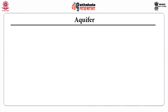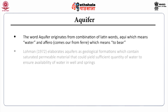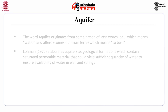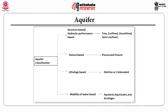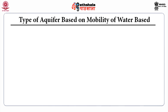Now we will discuss about aquifers. The word aquifer originates from a combination of two Latin words: 'aqui', which means water, and 'ferre', which means to bear. Lohmann in 1972 elaborated aquifers as geological formations which contain saturated permeable material that could yield sufficient quantity of water to ensure availability of water in wells and springs. Aquifer classification: aquifers can be classified depending upon the structure, texture, lithology, and mobility of water.